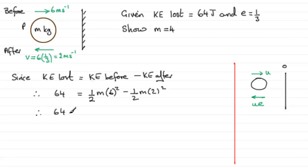so therefore all we need to do now is just tidy this up half M times 36 here is going to be 18 M and then half M times 4 that's going to be 2M so therefore we've got 64 equals 18 M take 2M which is 16 M and we can divide both sides by 16 and get the M equals 64 divided by 16 which gives us M equals 4 as we had to show